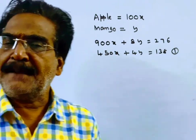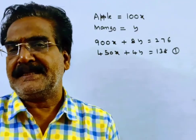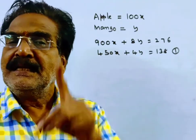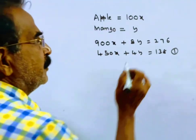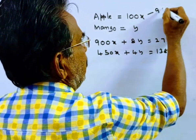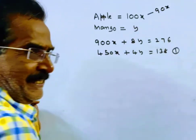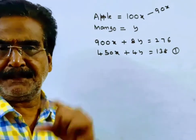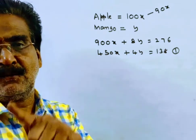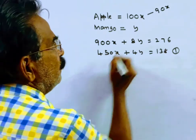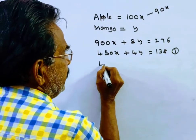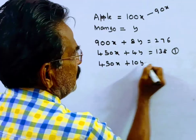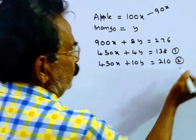Now the price of apple is reduced by 10% and the price of mango remains the same. The present price of apple is Rs. 90x. At this price, 5 apples and 10 mangoes equals Rs. 210. So 450x plus 10y equals Rs. 210. This is equation 2.